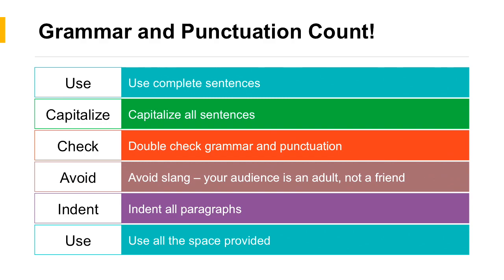Don't forget grammar and punctuation count. Use complete sentences. Make sure you are capitalizing. Double check your grammar and punctuation. Please avoid slang — you are not texting, so don't write like you are texting. Keep in mind that your audience is an adult, not a friend, so write accordingly. Indent all paragraphs so it is clear to the marker that you are starting a new paragraph. You can do that simply by pressing the space bar five times or pressing tab.